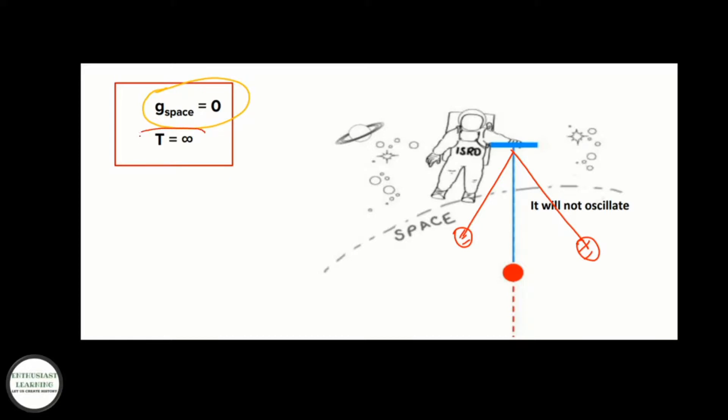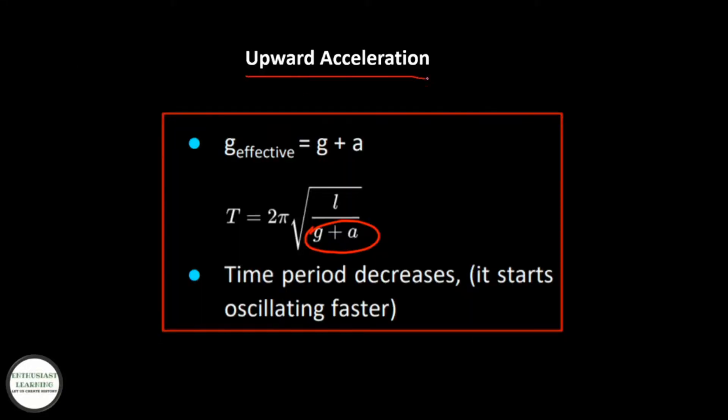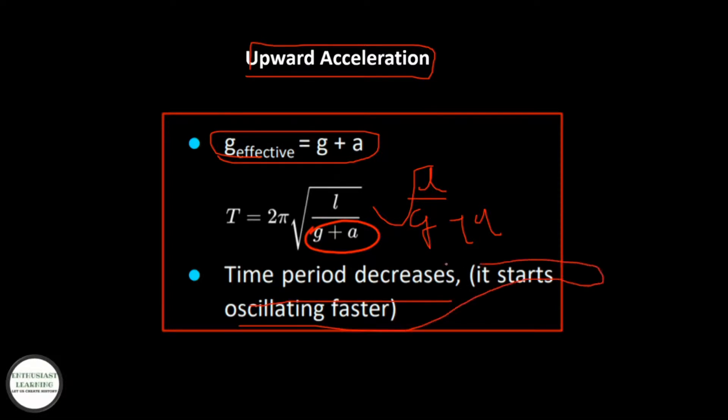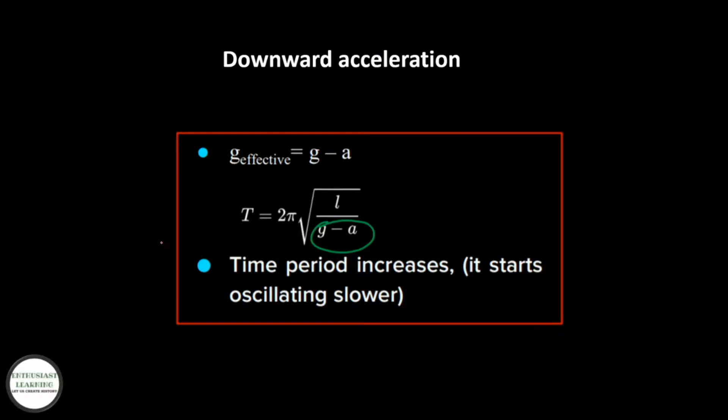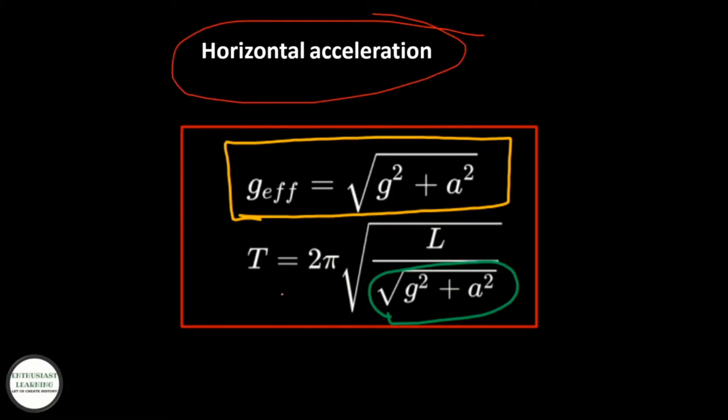Upward acceleration: g_effective = g + a, T = 2π√(L/(g+a)). The time period decreases; it starts oscillating faster. Downward acceleration: g_effective = g - a, T = 2π√(L/(g-a)). Time period increases; it starts oscillating slower. Horizontal acceleration: T = 2π√(L/√(g² + a²)).